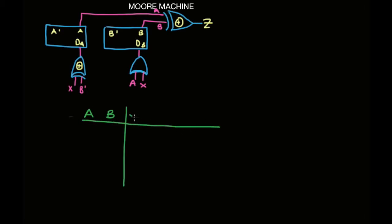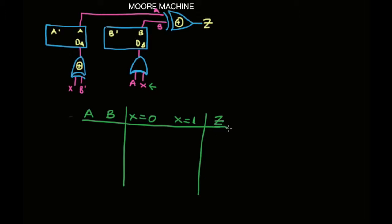We need our X equals 0 and X equals 1, which is usually your next state. This tells you the value when X toggles, and we have Z, which is our output.